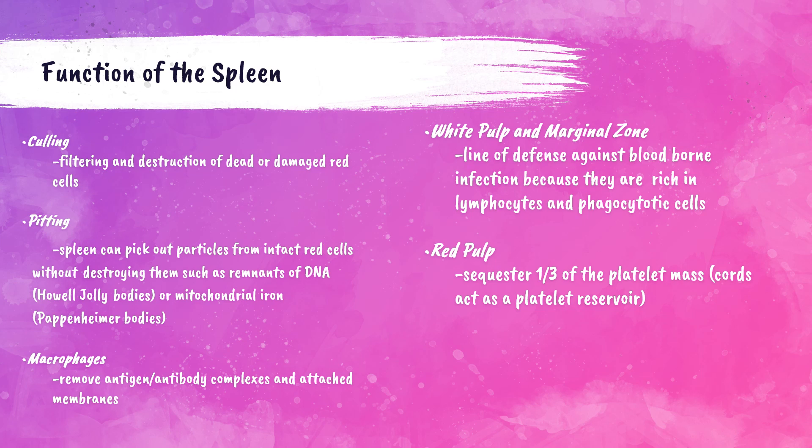Macrophages are present to remove antigen-antibody complexes and attached membranes. The white pulp is rich with lymphocytes, which are an integral part of the immune system. The red pulp acts as a filter, destroys red blood cells, and sequesters platelets.